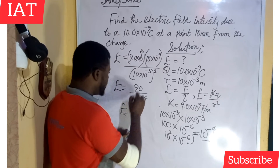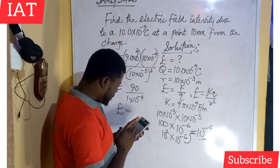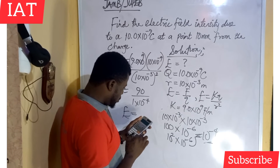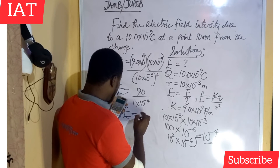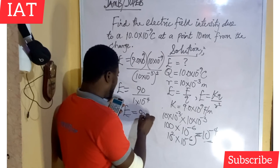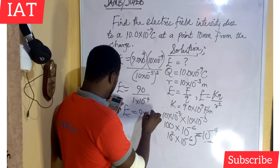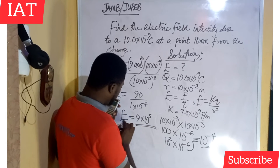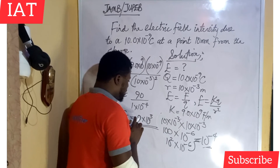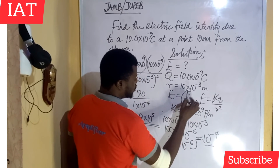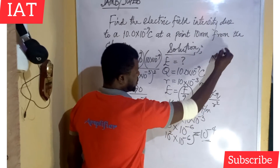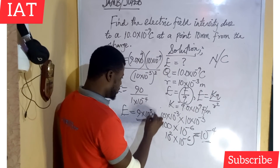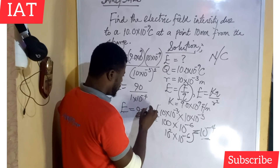Finally, we divide the numerator by the denominator: 90 divided by 1 times 10 to the power of minus 4 gives us 900,000, which is the same as 9 times 10 to the power of 5. The unit of electric field intensity is derived from the expression — force is in newtons, charge is in coulombs, so the unit is newtons per coulomb. This is the solution to the problem.